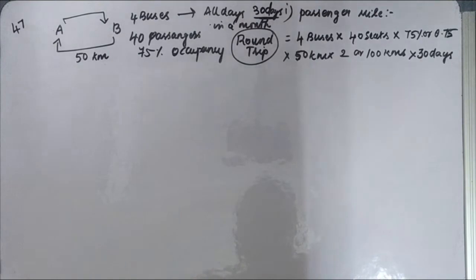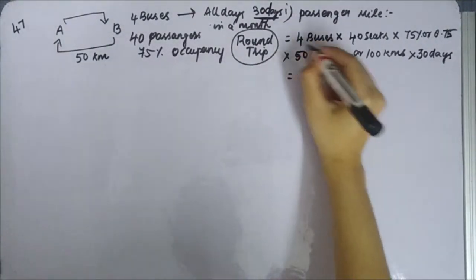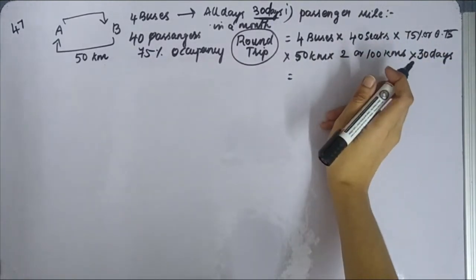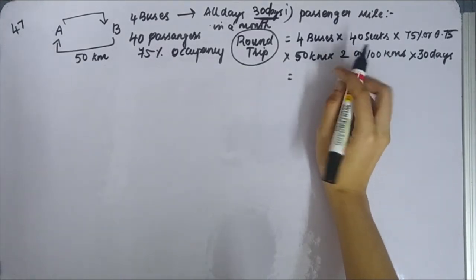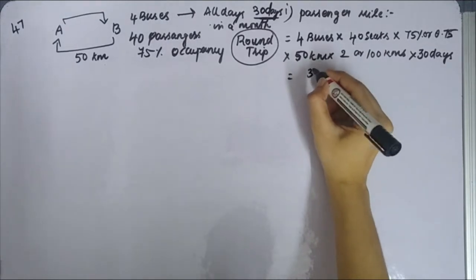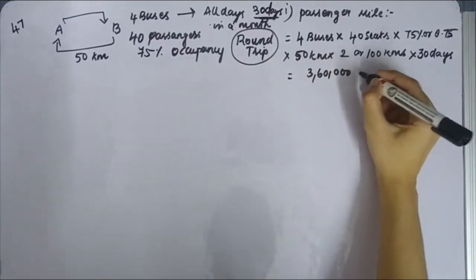So passenger miles, let's calculate. So let's multiply. 160, 160, 160, 216,000, 16,000, into 3,60,000 kilometer.